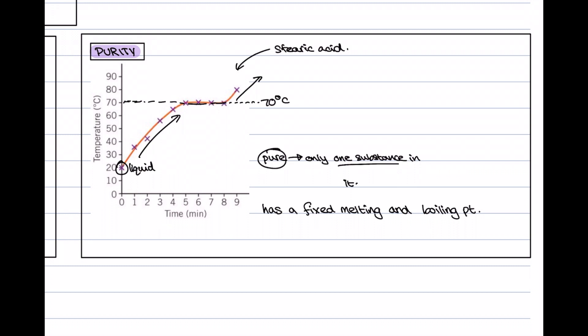Once every last particle has broken free, it's going to carry on heating up as a gas. An important thing to remember about a pure substance is that it has a fixed melting and boiling point. For stearic acid, its melting and boiling point is exactly 70 degrees if it is pure. If something is impure, it might melt or boil over a range of temperatures — so impure stearic acid might give a result of around 68 to 72 degrees Celsius, for example.